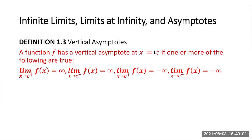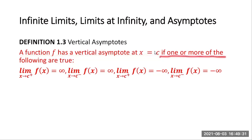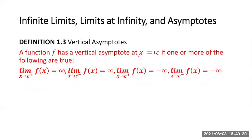Next I want to talk about infinite limits, limits at infinity, and asymptotes. We'll look at definition 1.3 to understand vertical asymptotes. A function f has a vertical asymptote at x = c if one or more of the following are true. We have four situations where you could get vertical asymptotes — let's look at an example for each case.